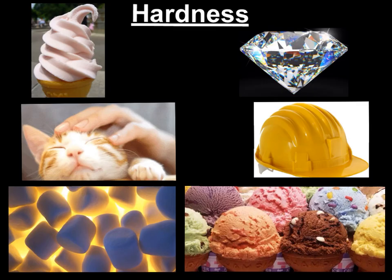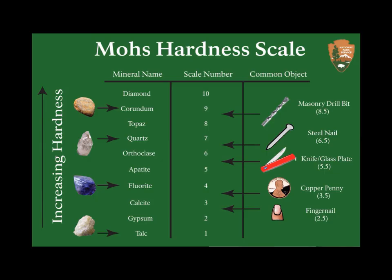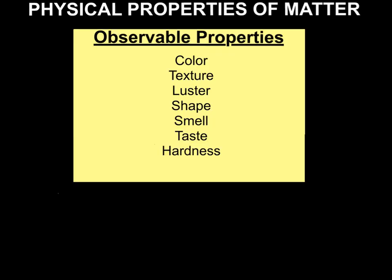Hardness is another property of matter. Right now we're going to use it as an observable property. It might be soft like a kitten, marshmallows, or frozen yogurt. Or it might be hard like a diamond — which is actually the hardest natural object in the world — or hard like a hard hat or hard ice cream. When you learn about rocks, you'll learn that hardness is also a measurable property using Mohs hardness scale. For now, please add hardness to our observable properties chart. Spelling still counts.